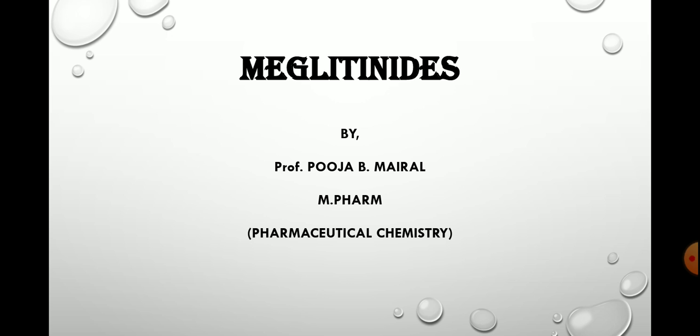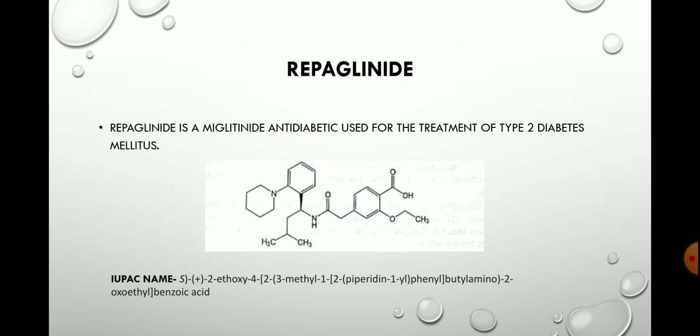Let's see the drug that is used as a meglitinide in the treatment of diabetes mellitus. The first drug of meglitinides is repaglinide. Repaglinide is a meglitinide anti-diabetic used for the treatment of type 2 diabetes mellitus. This is the structure of repaglinide.